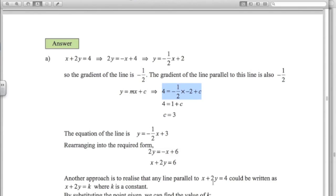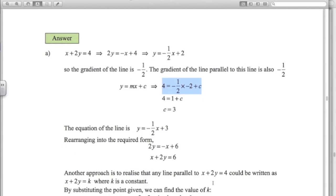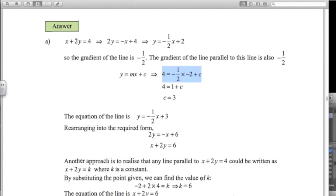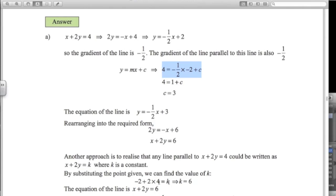Another approach to this is if we've got x plus 2y equals 4, then any line parallel to that will also have x plus 2y equals something. Because when you rearrange it, you're going to get negative 1.5 in front of the x value. So we could just substitute in the points here, negative 2 and 4 into this form, giving k equals 6. And then we've got our equation.